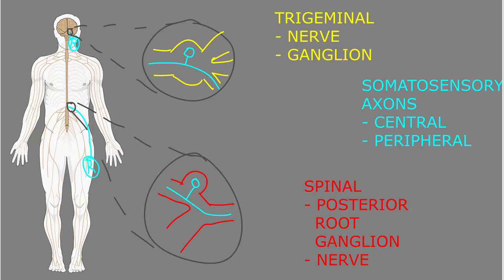One heading out into the periphery of the body called the peripheral axon, and one heading into the central nervous system called the central axon.